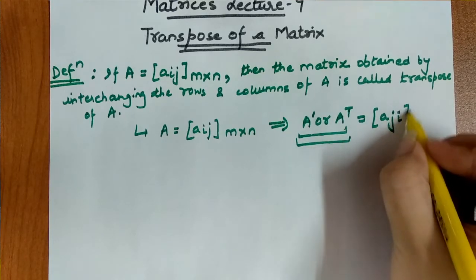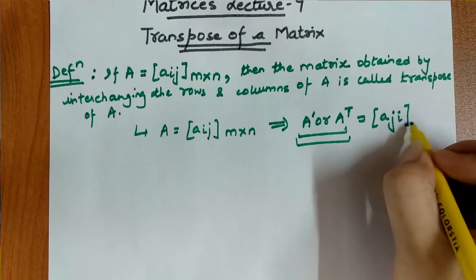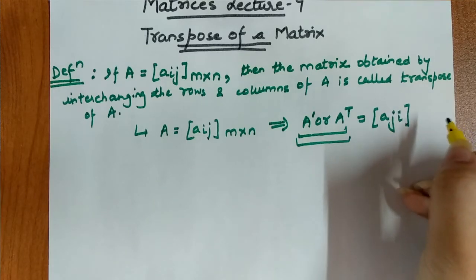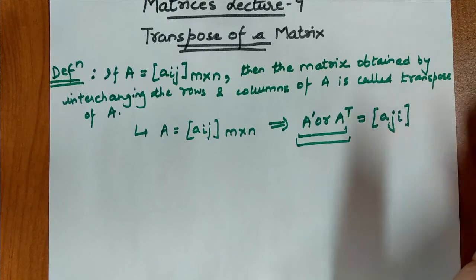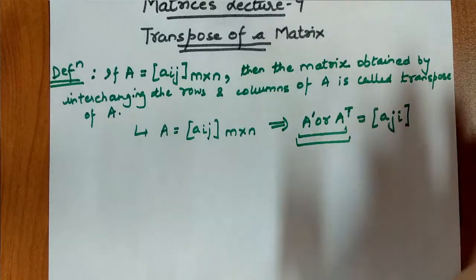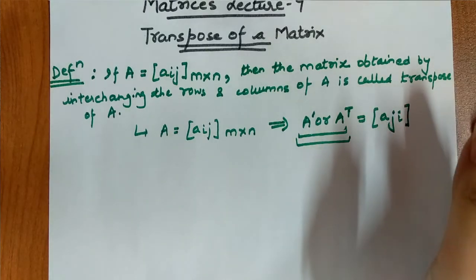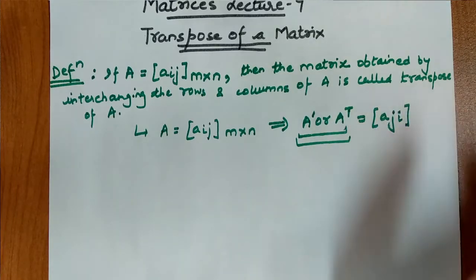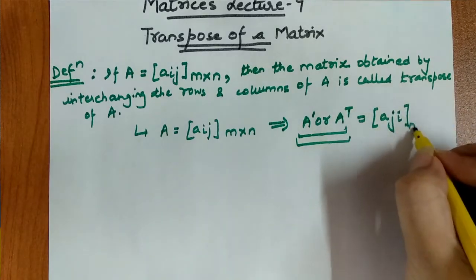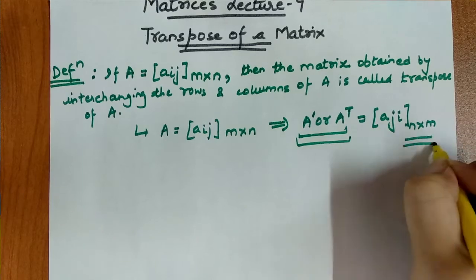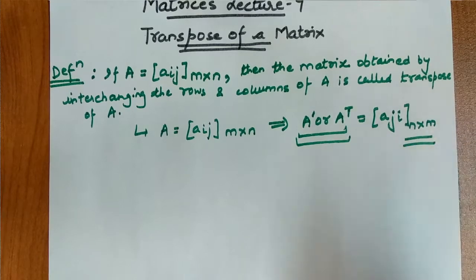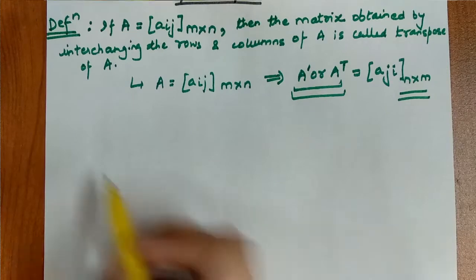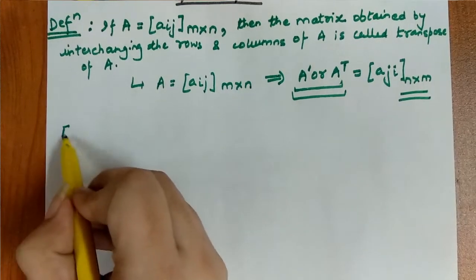The order of the matrix will also change. Since we are interchanging rows and columns, the new order will be n cross m. This will basically be the transpose of matrix A. Let's consider a few examples so you will understand clearly.